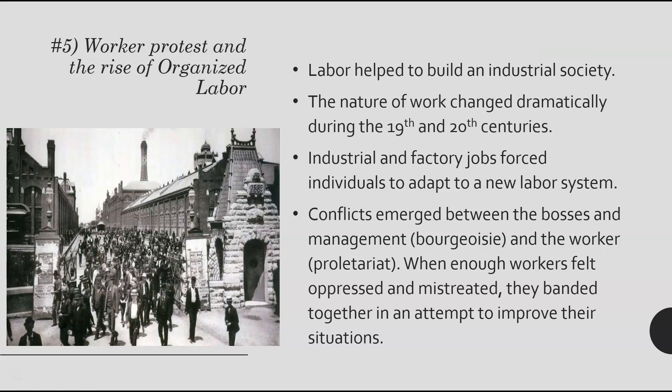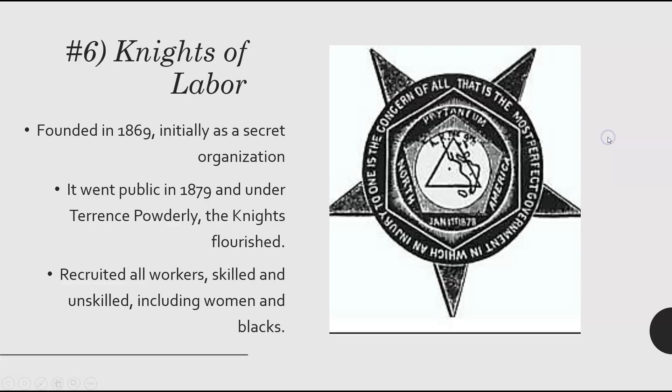We see organized labor emerging. Labor helped build this industrial society. The nature of work changed a lot in the 19th and 20th centuries — industrial and factory jobs forced individuals to adapt to new labor systems. Conflicts emerged between bosses and management — the bourgeoisie — and the worker, the proletariat. When enough workers felt oppressed and mistreated, they banded together in an attempt to improve their situations. Here in Michigan, we are a right-to-work state today; unions are not as strong as they used to be.